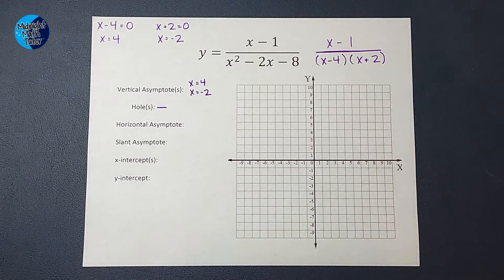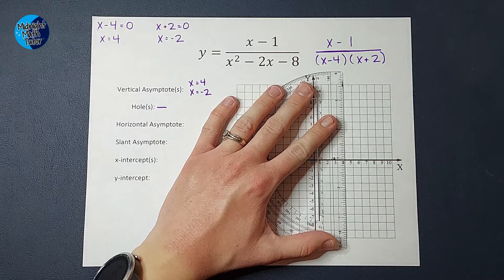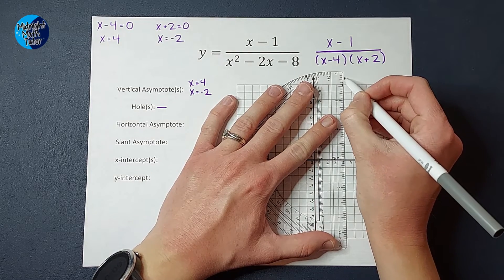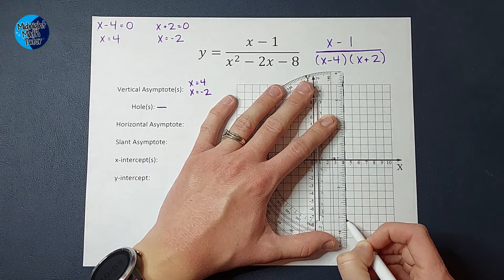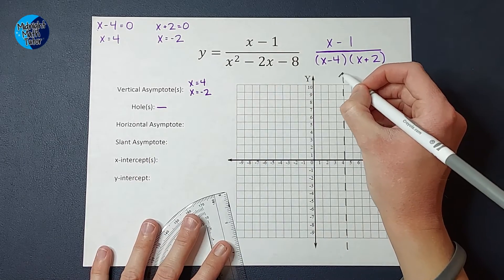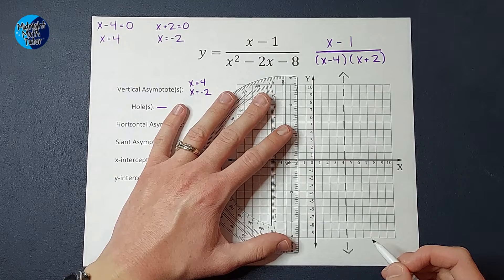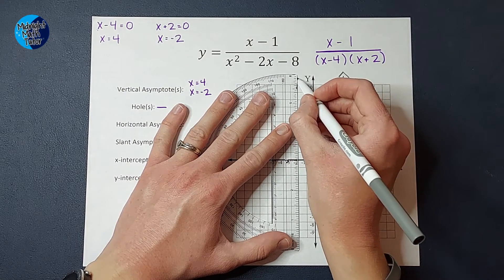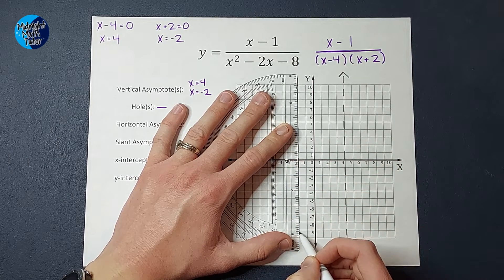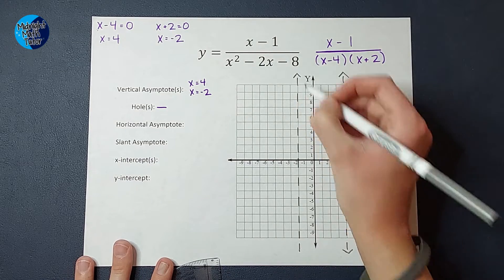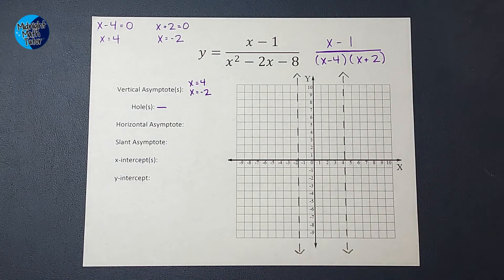How I represent that on my graph is with a dotted line. If you graph these on your graphing calculator, you may not actually see a dotted line — this is just how we show it by hand. You'll notice that in that area the graph does not touch, but it gets closer and closer to it. Here's my other one at x equals negative 2. My graph will not cross those lines — if it does, go back and check your math.